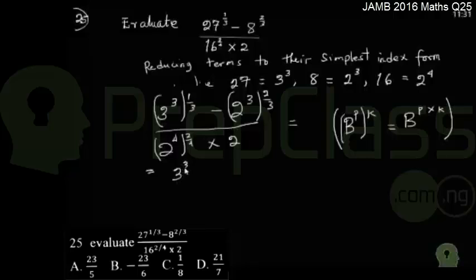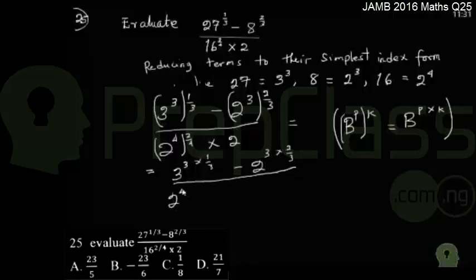Applying the rule, this gives me 3 raised to the power of 3 times 1 over 3, minus 2 raised to the power of 3 times 2 over 3, all over 2 raised to the power of 4 times 2 over 4 times 2. This reduces to 3 raised to the power of 1, minus 2 raised to the power of 2.